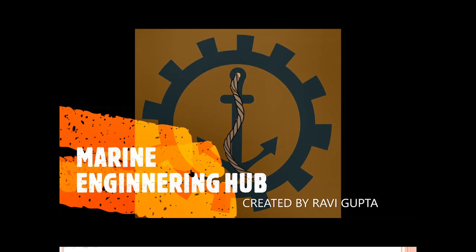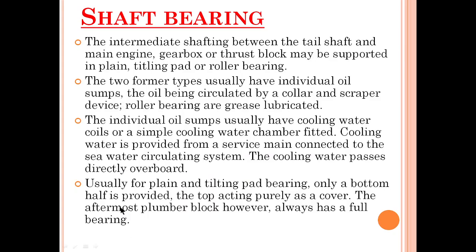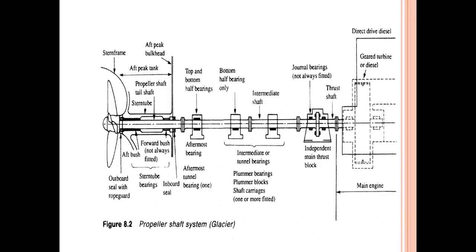Dr. Ravi Gupta. Today we are going to talk about shaft bearings, various types of shaft bearings. As you can see in this diagram, the propeller is fitted to the tail end shaft and is connected to the main engine via intermediate shaft. This intermediate shaft is supported by various types of bearings, and these bearings are called shaft bearings.